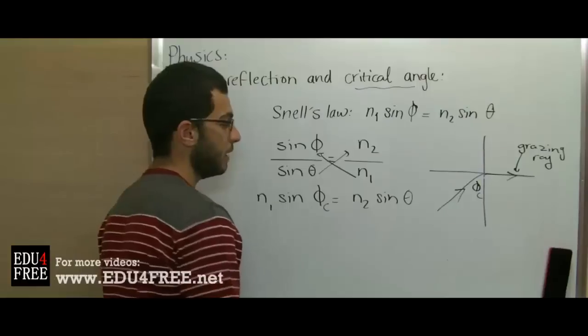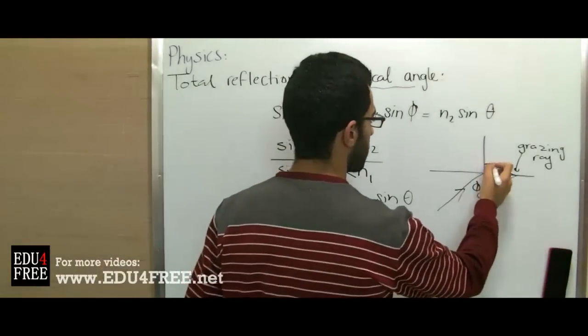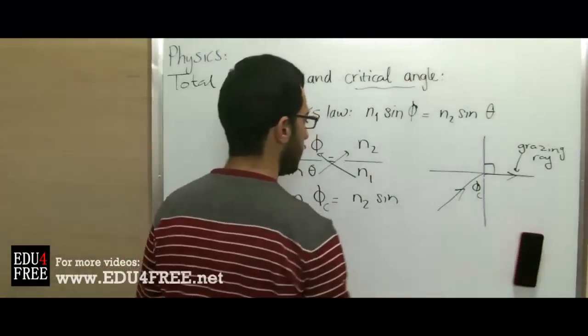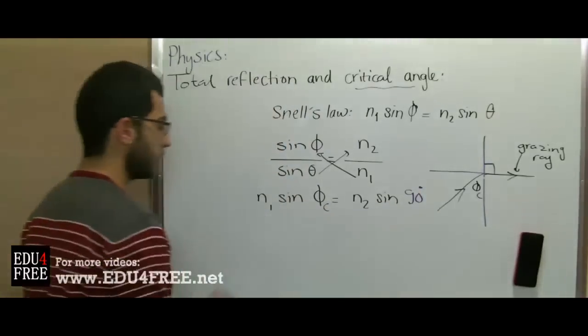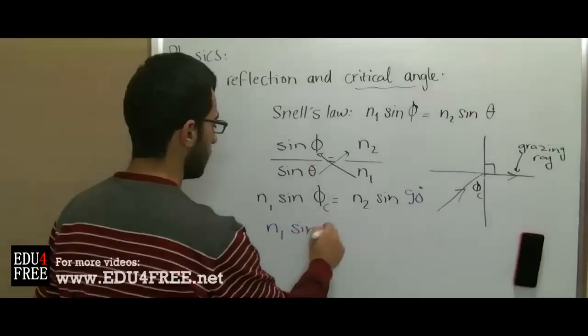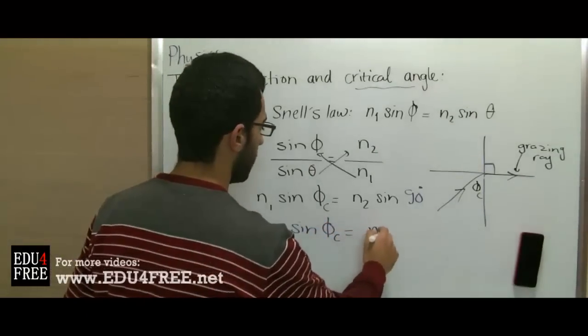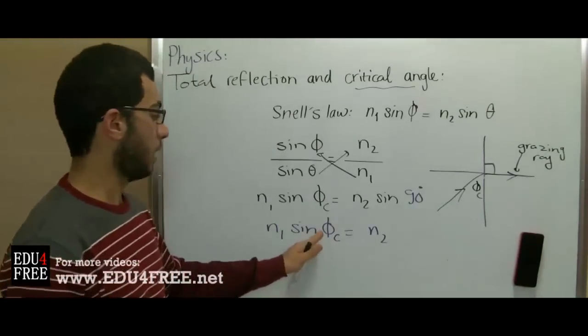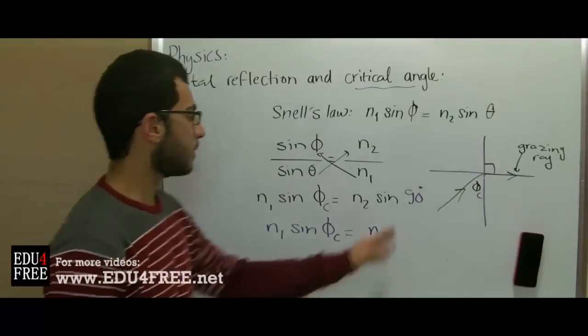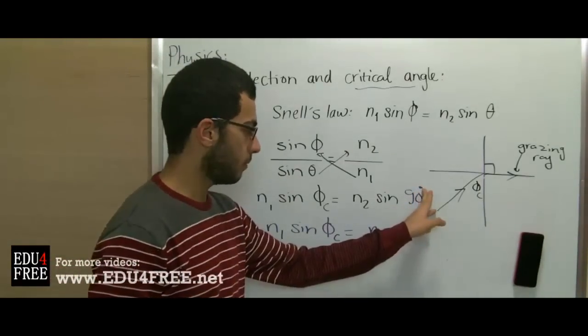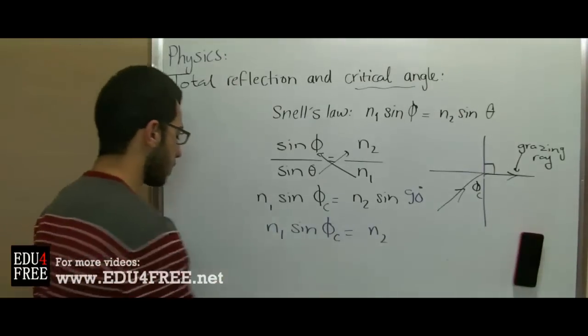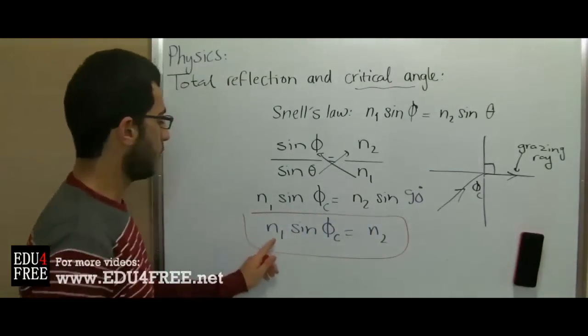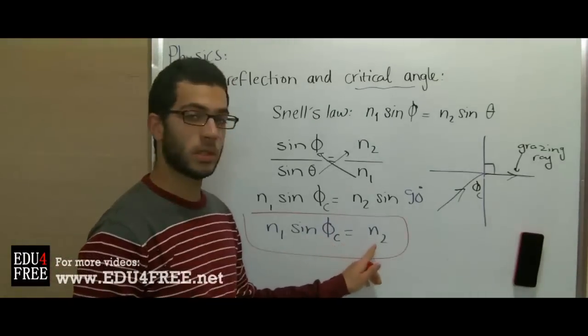The angle of refraction is 90 degrees. So we have n2 sine 90, and sine 90 degrees is 1. Therefore, n1 sin φc equals n2. When we want to determine the critical angle of a medium, sine 90 will be 1, so Snell's law becomes n1 sin φc equals n2.